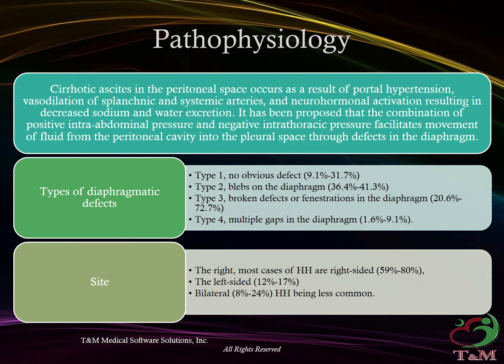Types of diaphragmatic defects: Type 1 – No obvious defect, 9.1% to 31.7%. Type 2 – Blebs on the diaphragm, 36.4% to 41.3%. Type 3 – Broken defects or fenestrations in the diaphragm, 20.6% to 72.7%. Type 4 – Multiple gaps in the diaphragm, 1.6% to 9.1%.